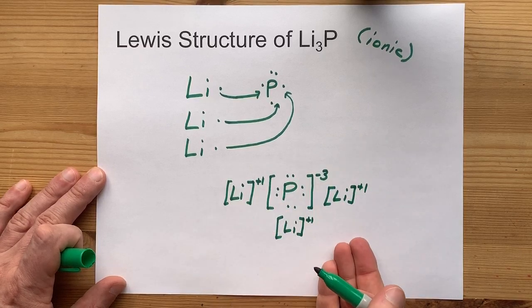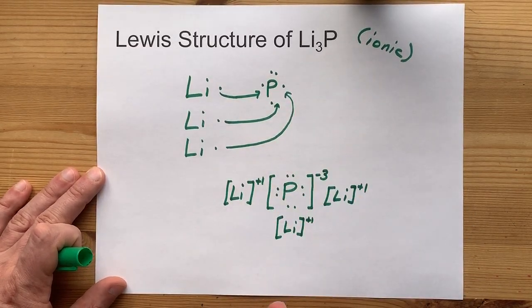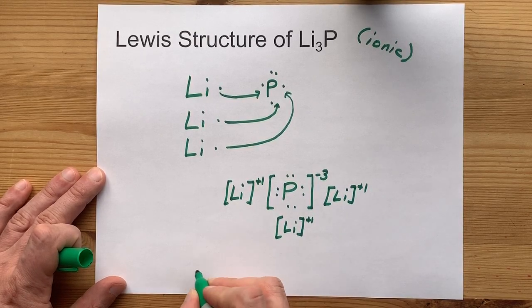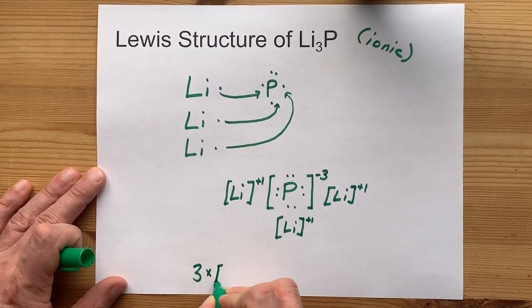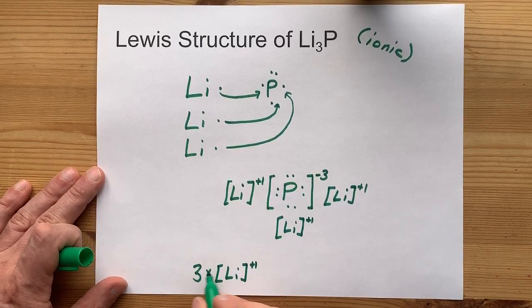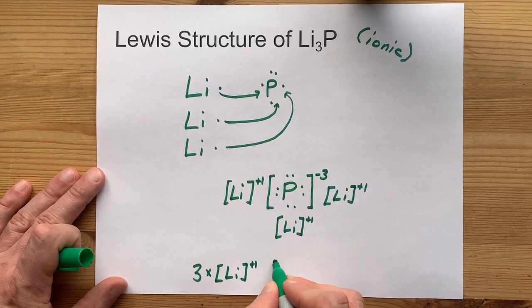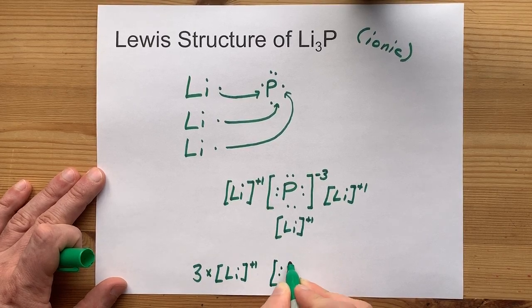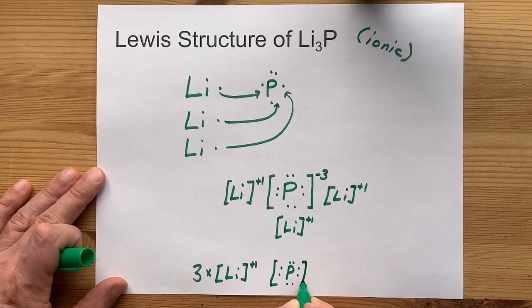This is the complete Lewis structure for lithium phosphide. Some teachers are going to let you take a shortcut, writing 3 times Li plus 1. That's just so you don't have to write it out 3 times like I did, but you'll still have to write the P with its minus 3 charge as well.